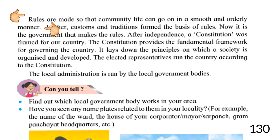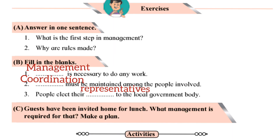Next, question number B: fill in the blanks. First blank: dash is necessary to do any work — answer is management. Second blank: dash must be maintained among the people involved — answer is coordination. Third blank: people elect their dash to the local government body.